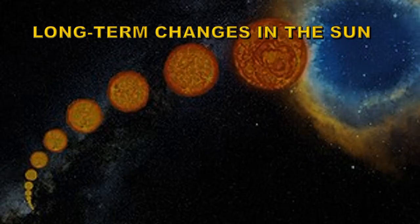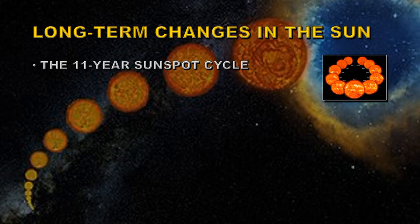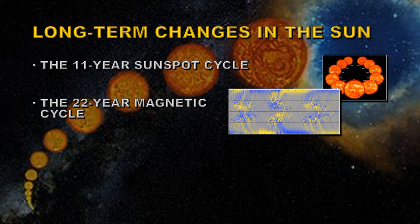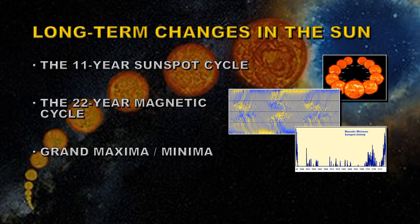Here are some examples of long-term changes on the Sun. One of the best known is the 11-year sunspot cycle, where at solar minimum there are hardly any sunspots and at solar maximum there can be large numbers — up to about 200. It's also commonly known that there is a 22-year magnetic cycle, reflecting the fact that sunspot polarities reverse every cycle, so what was positive in one cycle becomes negative in the next, and vice versa.